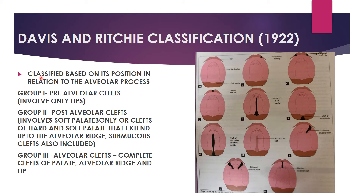The first is the Davis and Riches classification, which classifies clefts by position relative to the alveolar process. Group 1 is pre-alveolar cleft involving only the lip, with subgroups: unilateral, median, and bilateral. Group 2 is post-alveolar cleft involving soft palate only or hard and soft palate up to the alveolar ridge, including sub-mucous clefts. Group 3 is alveolar cleft with complete cleft of palate, alveolar ridge, and lip — subdivided into unilateral, bilateral, and median.